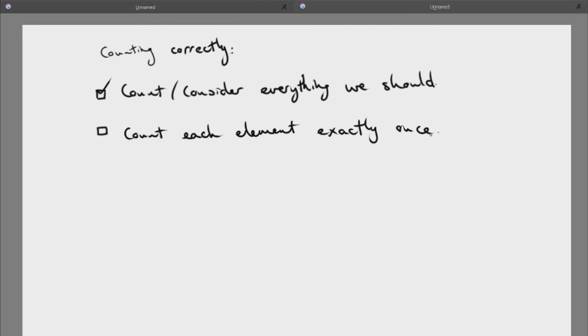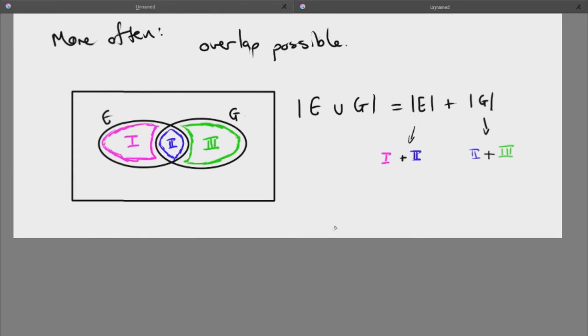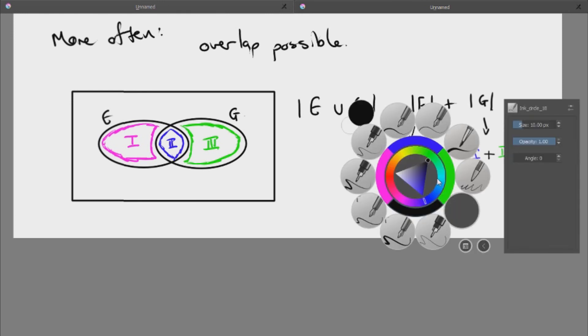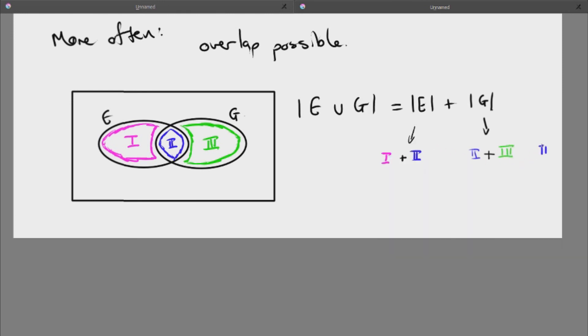If someone asks me how many people are in the room and I count them over and over, my number's not correct. That's the problem that we're doing over here. When I'm counting the number of elements in E, I'm counting region one and region two. Then when I'm moving on to G, I'm counting region two again. So if I leave my calculation like this, it's not correct. The blue regions count twice, so my number is more than it should be. We need to take away one blue region because we added it twice.